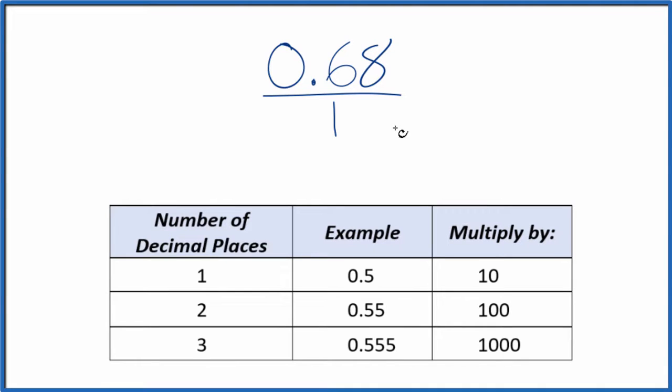What we need to do is get 0.68 to a whole number, and we can do that. We have one, two decimal places, so two decimal places you do that by multiplying by 100. So 100 times 0.68 equals 68, so now we have a whole number.